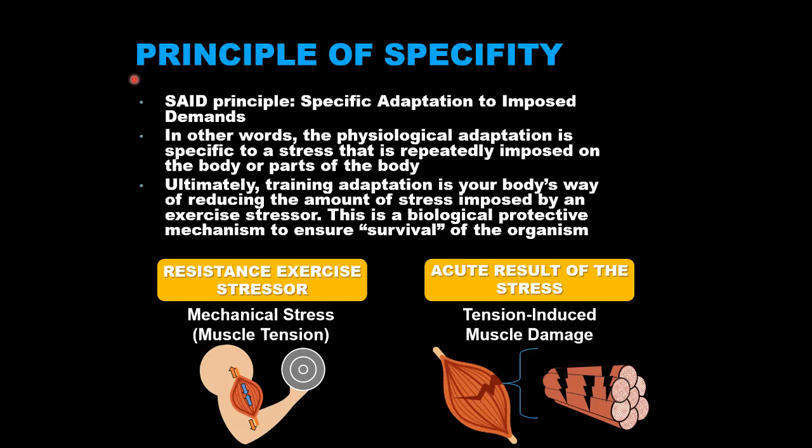Let's talk about the specific stressor associated with resistance training that ultimately leads to adaptations, i.e., strength development. First we need to understand the SAID principle, which stands for specific adaptation to imposed demand, meaning the physiological adaptation is specific to a particular stressor that is repeatedly imposed on the body or parts of the body like the neuromuscular system. So the stressor and the adaptation go hand in hand — they are specific to one another. In the case of resistance training, the overarching physiological adaptation is increased neuromuscular strength or, more technically, force-producing capacity.